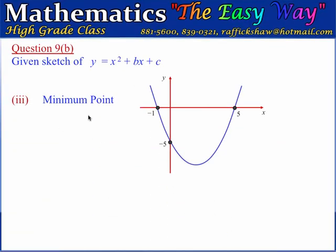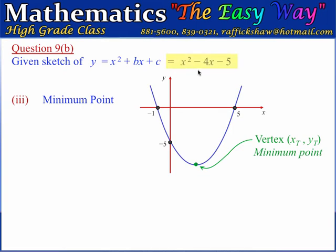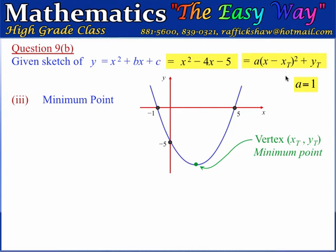Part 3 wants us to state the coordinates of the minimum point. We can put the expression in vertex form, with coordinates (xt, yt). Since a equals 1, b equals negative 4, and c equals negative 5, the formula for the x-value of the turning point is xt equals negative b divided by 2a, where b is the coefficient of x and a is the coefficient of x squared.